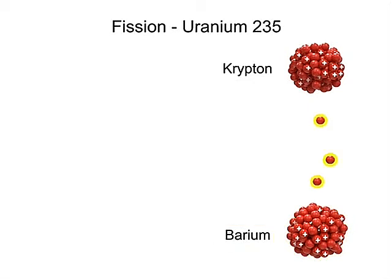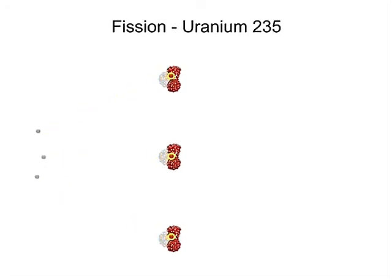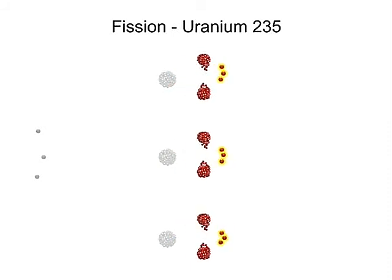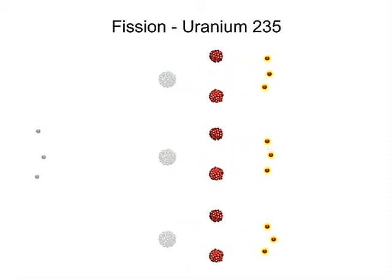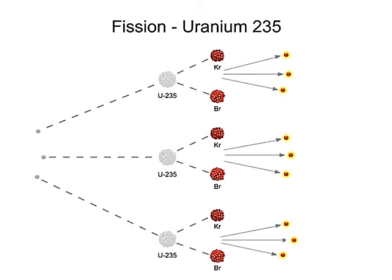Three neutrons are also generated from this powerful release of energy. The three forcefully ejected neutrons can each strike an atom of uranium, resulting in, in the case of an atomic bomb, a catastrophic chain reaction.